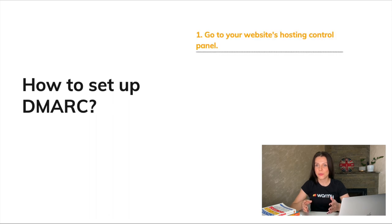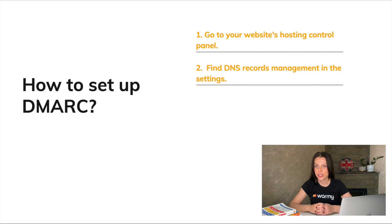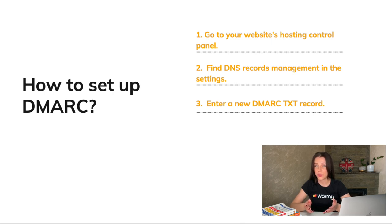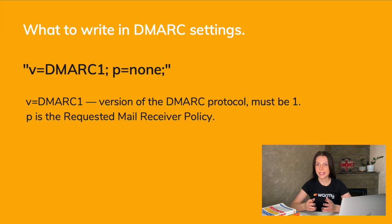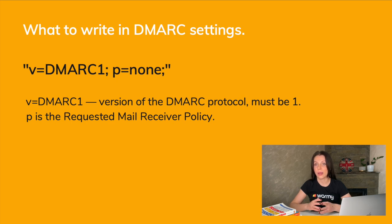How to set up DMARC: go to your website's hosting control panel and find DNS records management in the settings. Enter a new DMARC TXT record. A TXT record is a type of DNS record in text format that tells external sources what to do. We have listed the most common ones in this video and in the resources — you can copy the entry from there and save your changes. The DMARC tags are either required or optional. The required ones are v=DMARC1 and p= with the policy value. The v=DMARC1 parameter defines the version and allows the provider to recognize this TXT record as the DMARC policy — if this parameter does not come first, DMARC is not recognized.